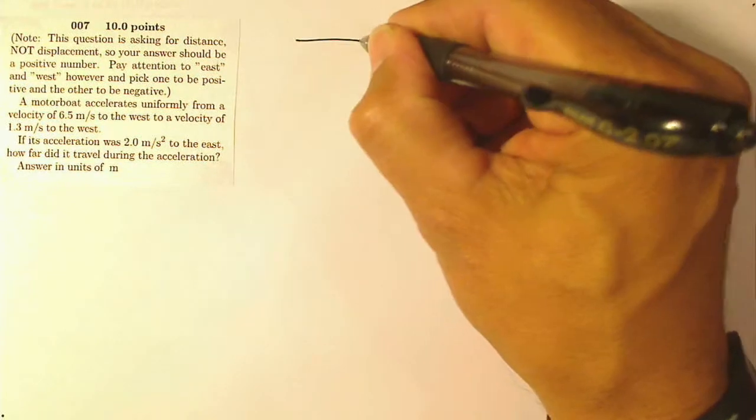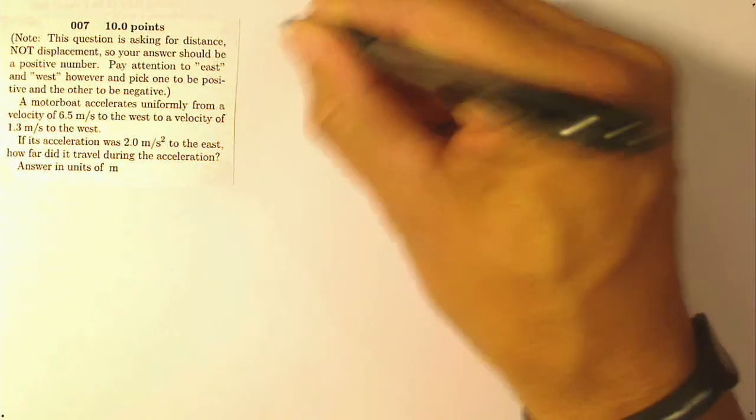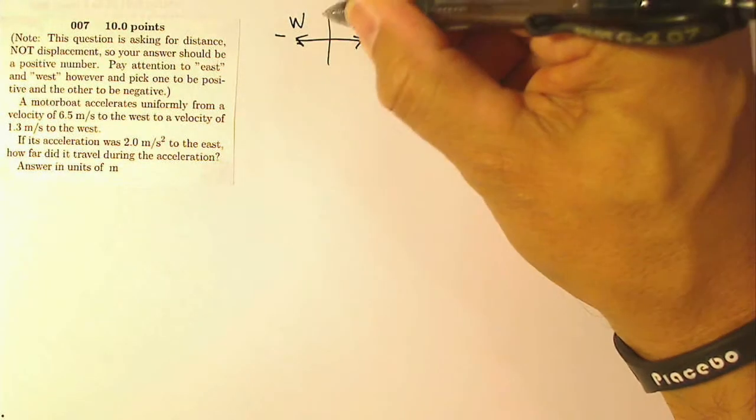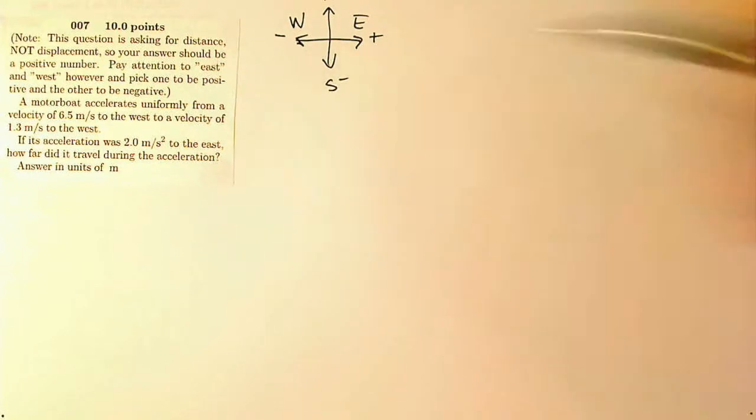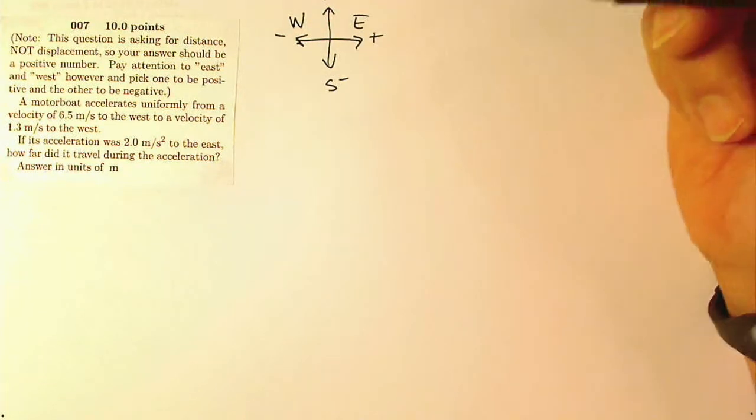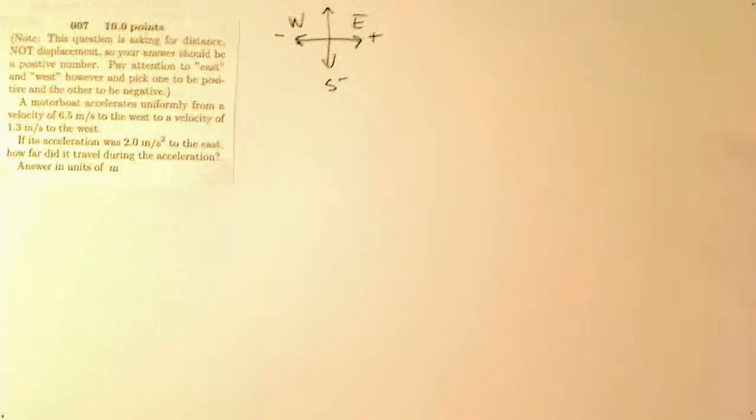I tend to like east being positive and west being negative, and sometimes that's a default. You will also find out that north is positive and south is negative. So this is a standard: north and east are positive, south and west are negative, just a standard way that it tends to be. If they don't tell you, that's probably right.